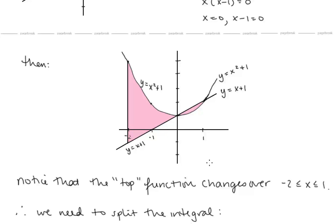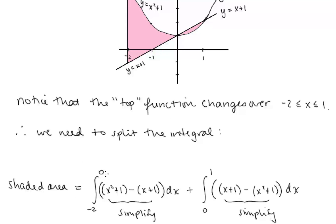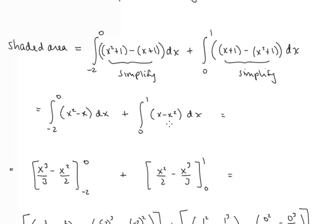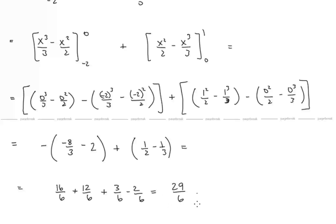Notice that the top function changes over this interval, so we have to split the integral into two parts: from negative 2 to 0, and from 0 to 1. From negative 2 to 0, we have x squared plus 1 minus (x plus 1). From 0 to 1, we have x plus 1 minus (x squared plus 1). Don't forget parentheses to ensure the proper sign. Simplifying and integrating, we end up with 29 sixths for that area.